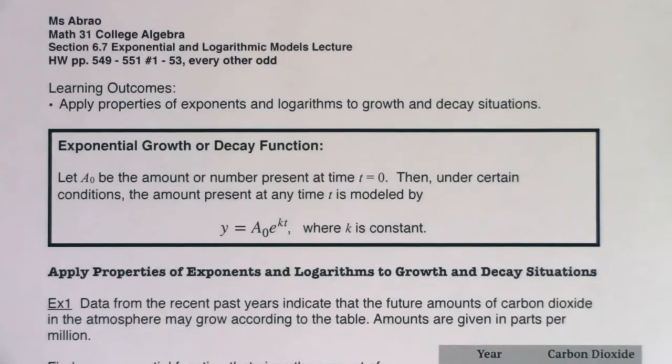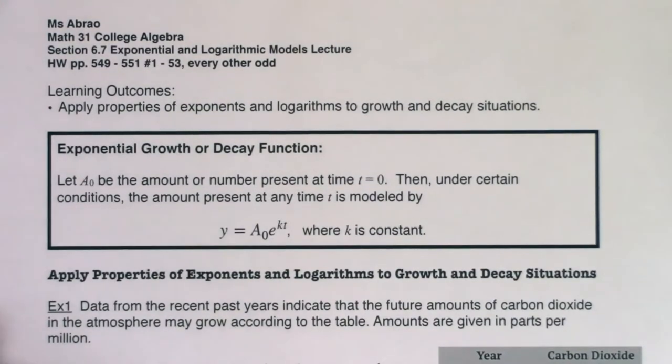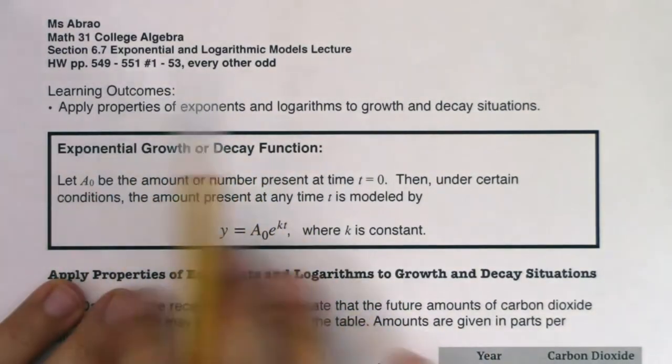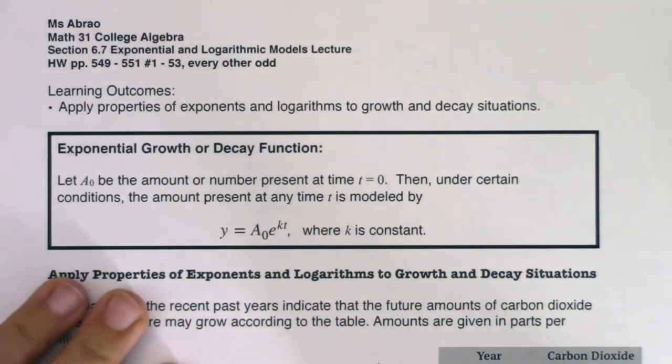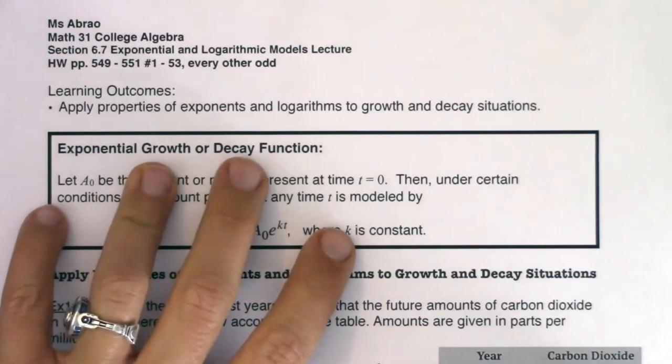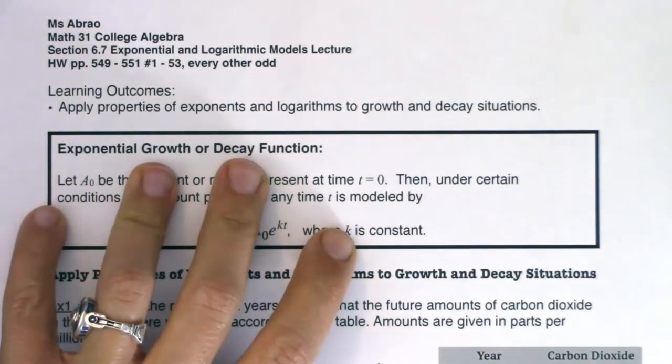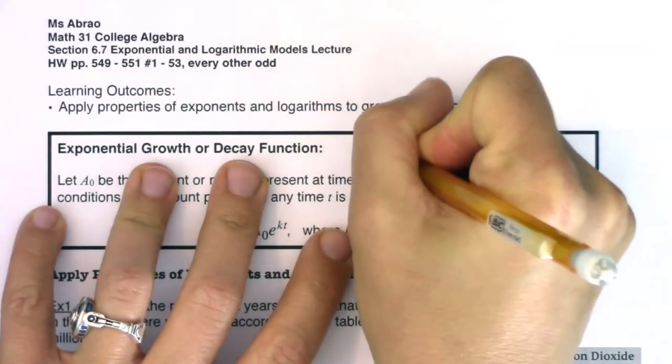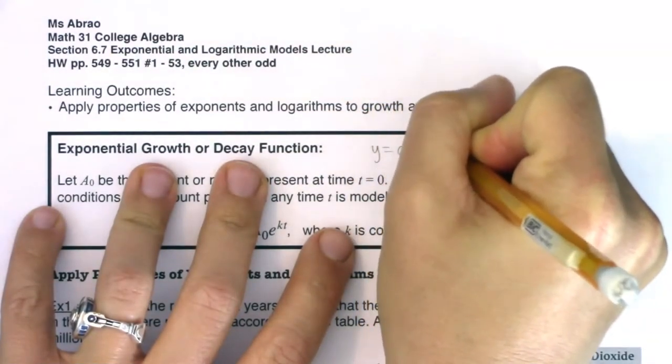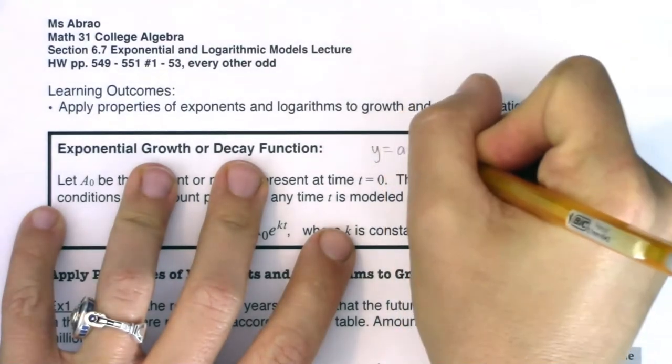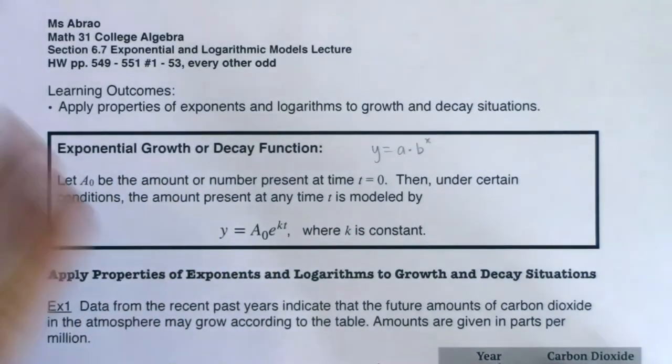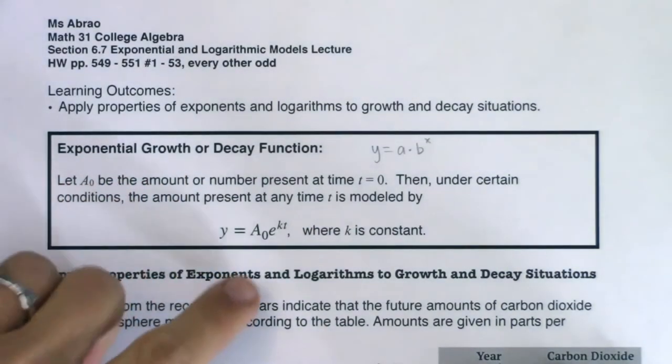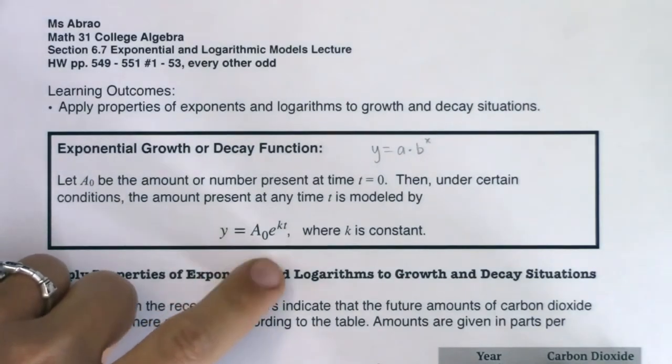Hey Math 31, welcome to section 6.7 where we're going to look at exponential and logarithmic models. We're going to take all the properties of exponential functions and logarithmic functions and apply them to growth and decay situations. You might be thinking, didn't we already look at exponential growth and decay in section 6.1? Yes, we absolutely did.